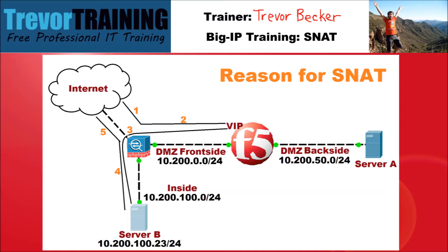The problem with this network communication is that the client on the internet is going to receive the response; however, the source IP address is going to be of Server B, not of the VIP. Since the internet client did not request a communication to Server B, yet it receives a response, the client will immediately drop that unknown response. Meanwhile, the client's connection request to the VIP will hang until it times out.